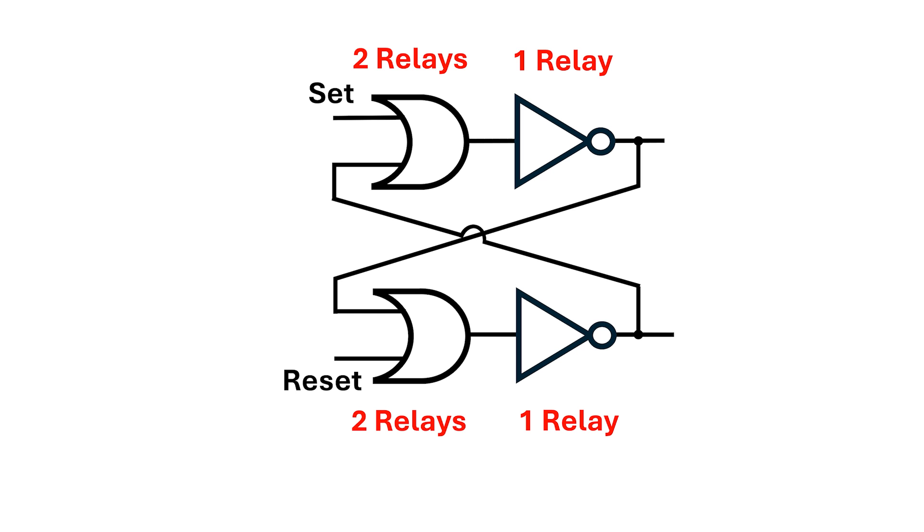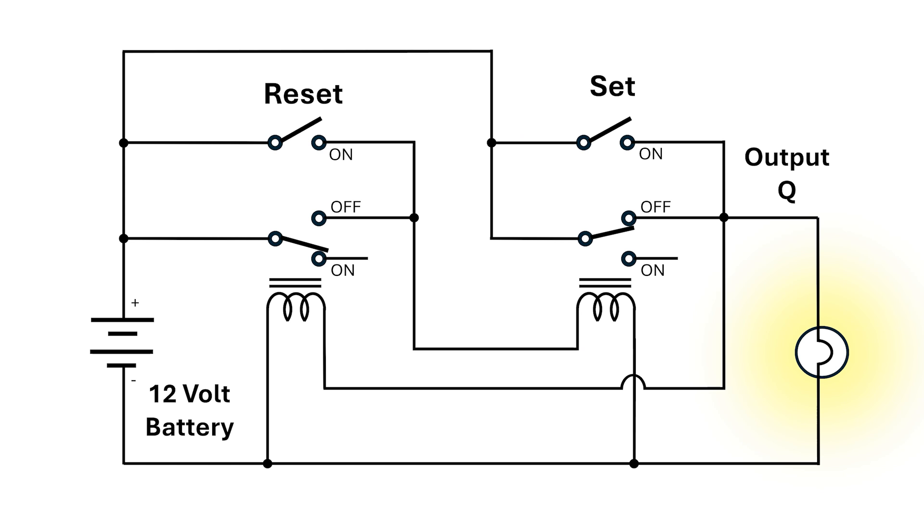Next, I said that each OR gate could be implemented with two relays, and each inverter with one relay, which gives us a grand total of six relays for each set-reset latch. But then I wanted to build an SR latch with just two relays.